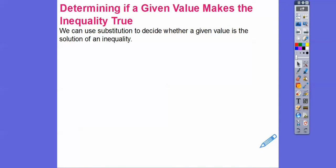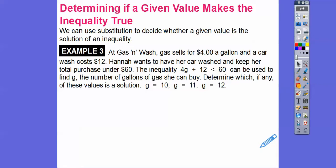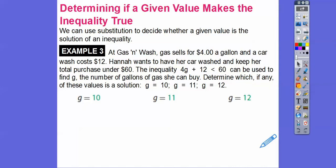Sometimes they'll give you possible solutions to test by plugging them into the inequality — we use substitution to decide whether a given value is a solution. At Gas and Wash, gas costs $4 a gallon and a car wash is $12. Hannah wants her car washed and to keep her total under $60, giving the inequality 4G + 12 < 60. We determine which of the values — G = 10, 11, or 12 — is a solution.